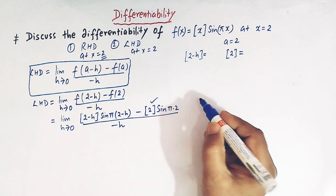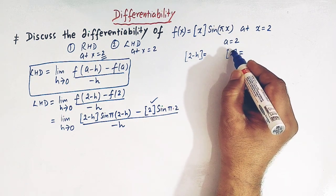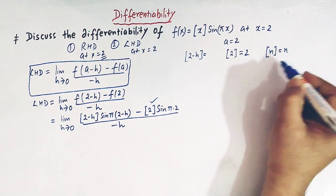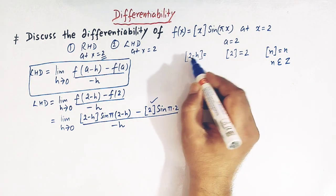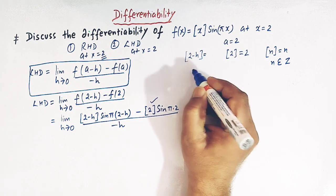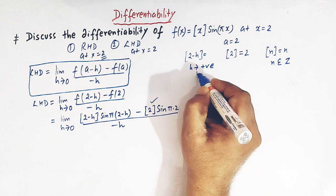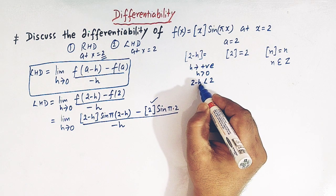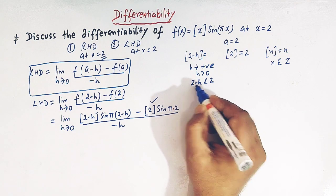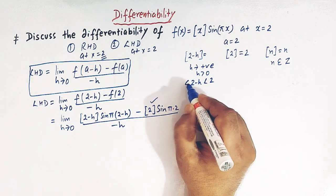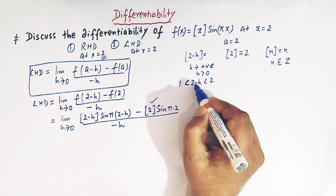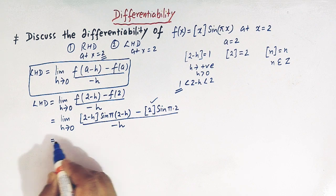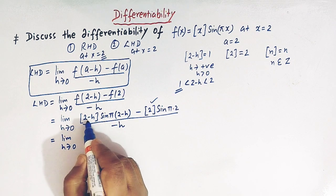From the definition of the greatest integer function, we know that ⌊n⌋ = n when n belongs to the set of integers. Here h is a positive quantity greater than 0, so 2−h is slightly less than 2 but greater than 1. Therefore, from the definition of the greatest integer function, ⌊2−h⌋ = 1.